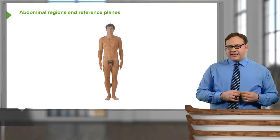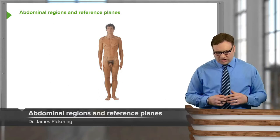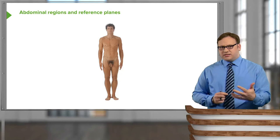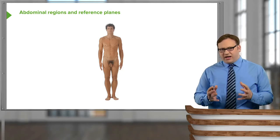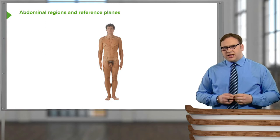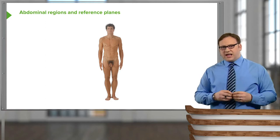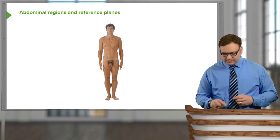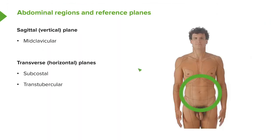If we look at the anterior aspect of the abdomen, superimposed onto this region are a number of lines which divide the abdomen into numerous regions. These lines use the surface landmarks we spoke about previously. We can create a sagittal or vertical plane that runs down. Looking at the mid-clavicular line — a line running all the way from the clavicle down to the midpoint of the inguinal ligament.